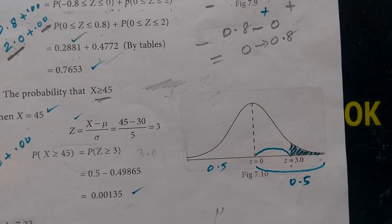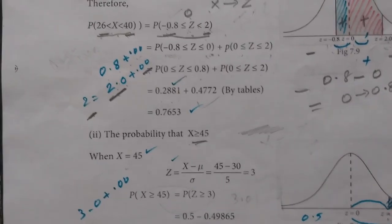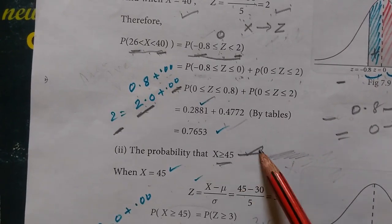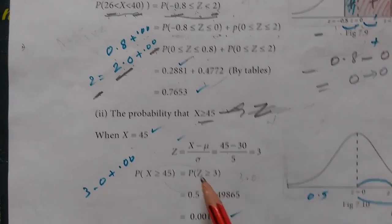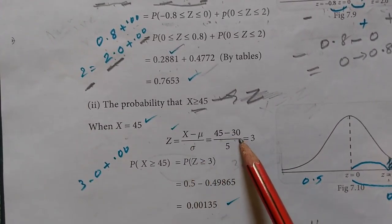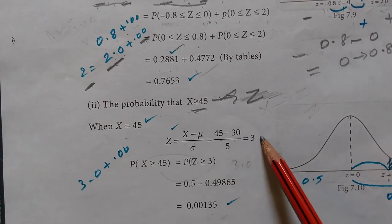Part (ii): The probability that X > 45. When X equals 45, using the formula: Z equals (45 minus 30) by 5 equals 3.